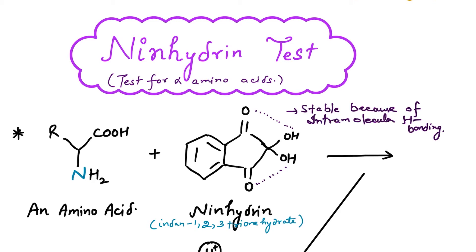Let's discuss the ninhydrin test, which is basically used for the detection of alpha amino acids. In this test, we react an amino acid with ninhydrin. This is the structure of ninhydrin, that is basically indane-1,2,3-trione hydrate. This molecule is basically stabilized by intramolecular hydrogen bonding.